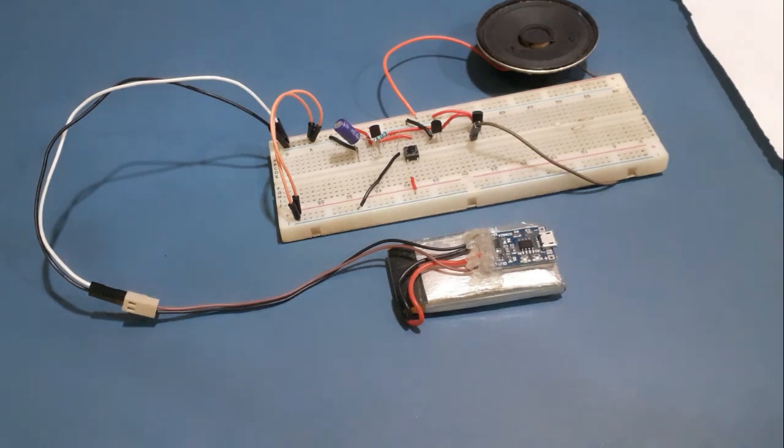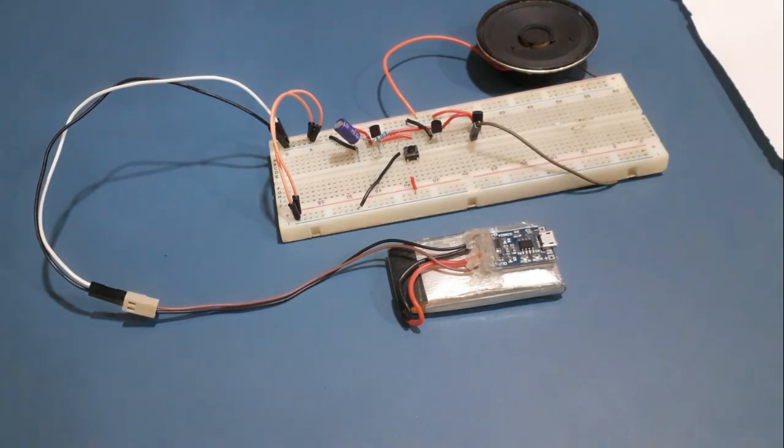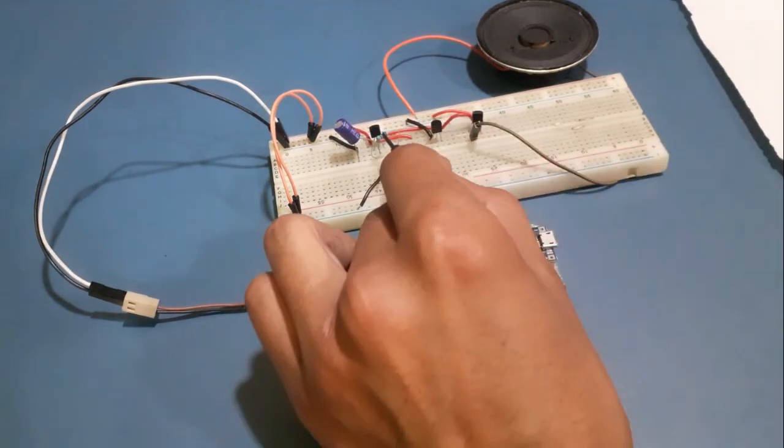As the capacitor discharges, the IC stops playing the tone and the duration for which the IC plays the tone depends on the discharging time of the capacitor that can be set by this resistor R1.